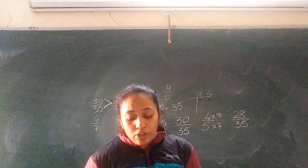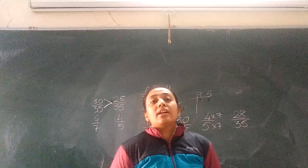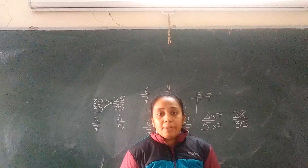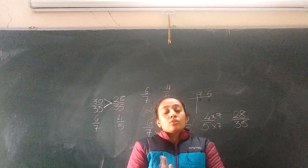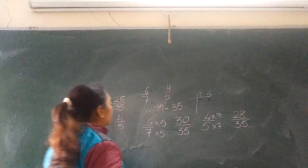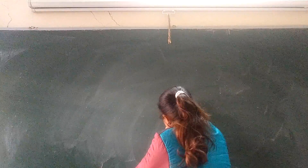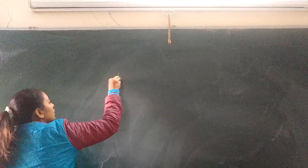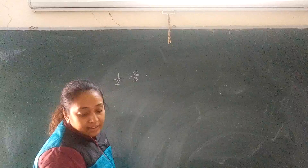Example number 11: rearrange the following fractions in both ascending and descending order. We need to arrange them in ascending and descending order. If you look at the fractions here — the numerators are different and the denominators are also different. Cross-multiplication is not possible here because there are 4 numbers, so the only method here is to find the LCM. The fractions are 1 upon 2, 2 upon 3, 5 upon 6, and 3 upon 8.